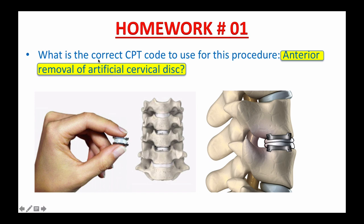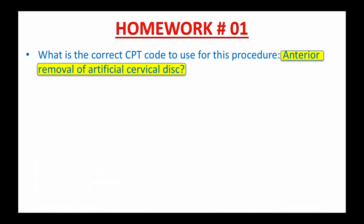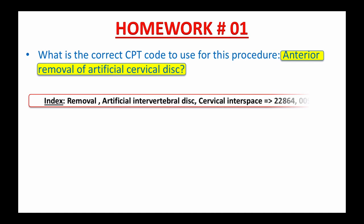What is the correct CPT code to use for this procedure: anterior removal of artificial cervical disc? In the index in your CPT book, you look under the main term 'removal,' then 'artificial intervertebral disc, cervical interspace,' which will give you two codes: 22864 and 0095T. Your next step is to review these two codes in the tabular list just to make sure they are correct.